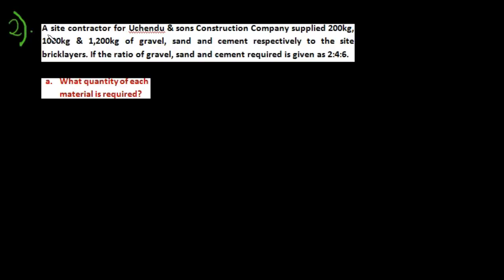A site contractor for Chendo and Source Construction Company supplied 200 kilograms of gravel, one thousand kilograms of sand, and one thousand two hundred kilograms of cement to the site brick layers. The word 'respectively' means in the order as they appear — 200 kg gravel, 1000 kg sand, 1002 kg cement. If the ratio of gravel, sand, and cement required is given as two to four to six, what quantity of each material is needed?